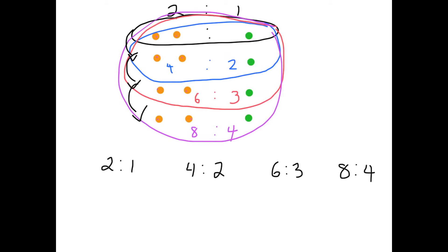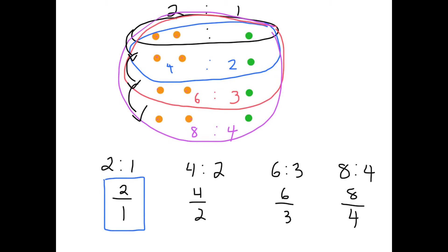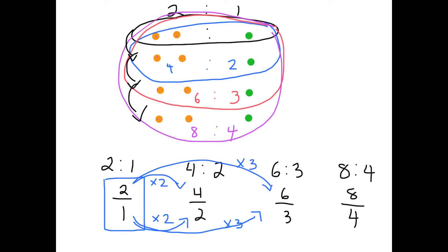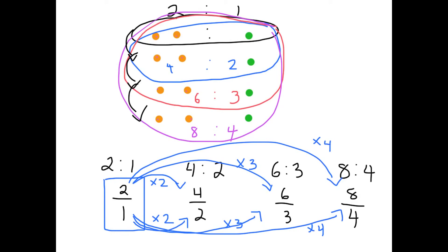Would you say that all of these ratios are equal? Let's write them as fractions and see: two over one, four over two, six over three, and eight over four. Looking at the original ratio, we started with one bottle of ginger ale and then doubled it — multiplied by two. Is two times two four? Yes. To get to the third bottle of ginger ale, we multiplied the original by three. Is two times three six? Yes. To get to the fourth ratio with four bottles of ginger ale, we multiply by four. Is two times four eight? Yes. Whatever we did to the denominator, we did to the numerator. So these represent proportional relationships — they're all equal. These are equivalent ratios or equivalent fractions.